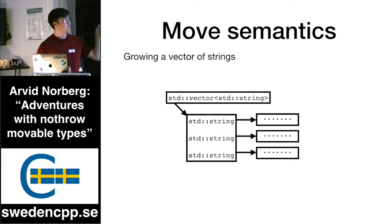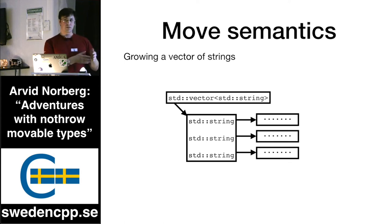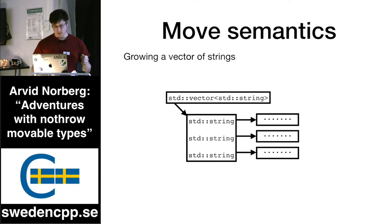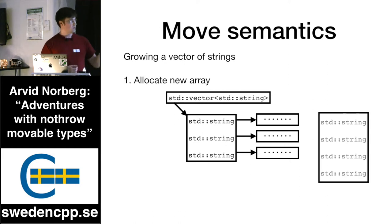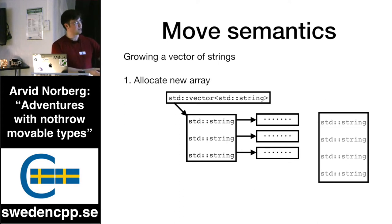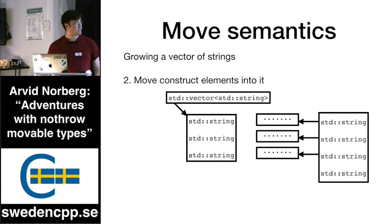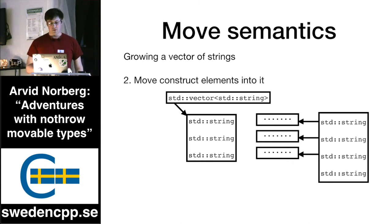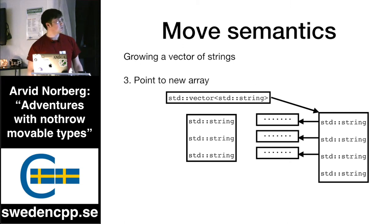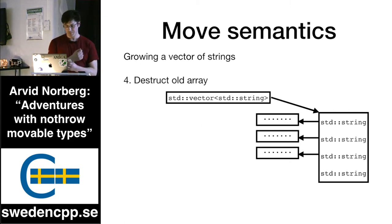However, if you apply move semantics to containers, that's really where they shine. Take a slightly more complex example where you have a vector of strings. Every string in this vector in turn has its pointer to the character array. If you want to grow this vector and add another string at the end, internally the vector will allocate a new array, move-construct those strings into that array — just moving the pointers over — and then destruct the old one. Life is good.